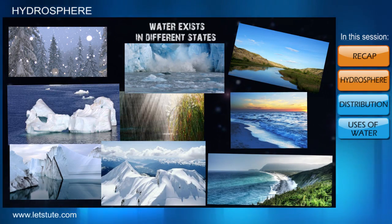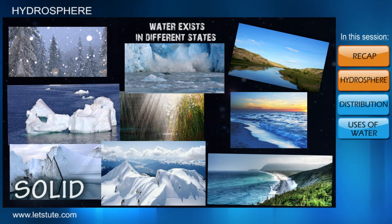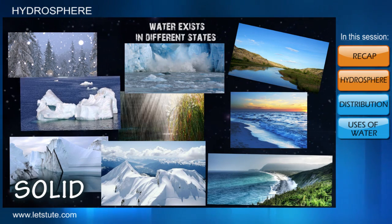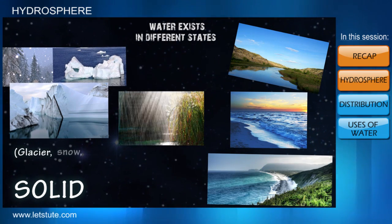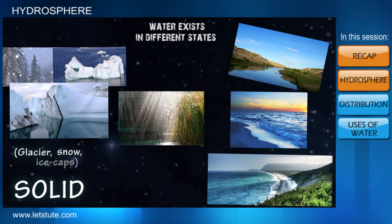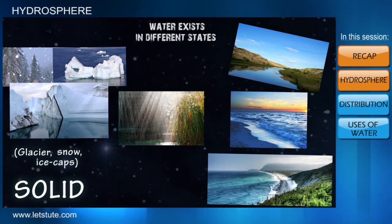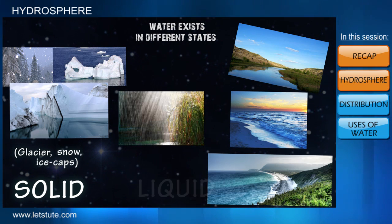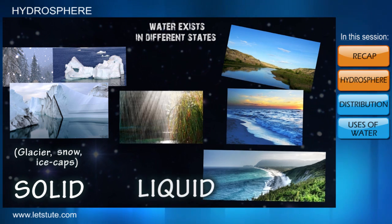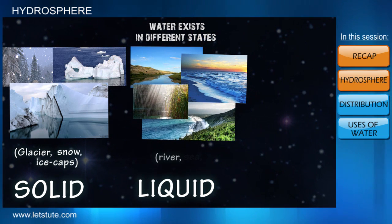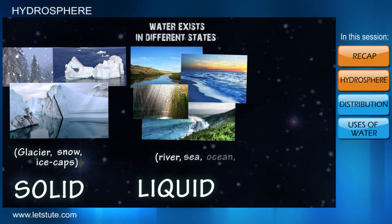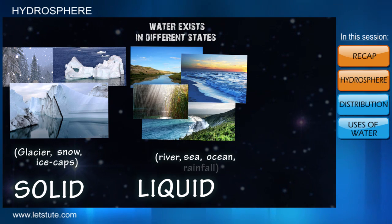If we observe, water is present in solid form in glaciers, snow, and ice caps. Whereas it exists in liquid form in rivers, seas, oceans, and rainfall.